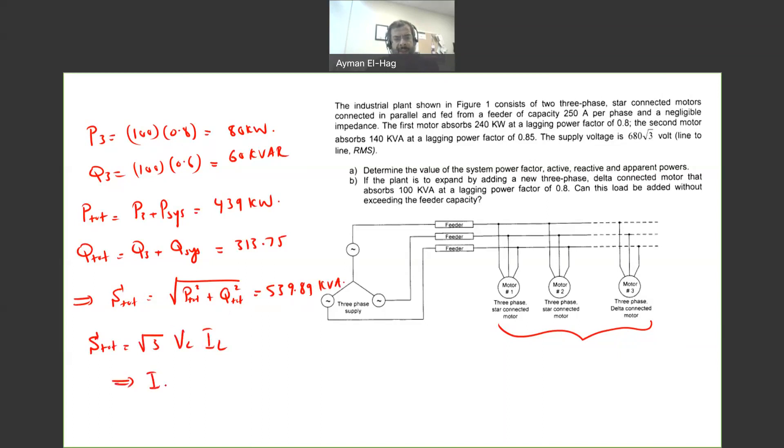So this is IL total equal to the S total divided by root 3 V line. So this is equal to 539.89 times 10 to the power 3 divided by root 3. Now the line-to-line voltage was given to us as 680 times root 3. So it's root 3 times 680, and when you calculate this, you will find the current is 264.5 amp, which is more than the 250 amp, the capacity.